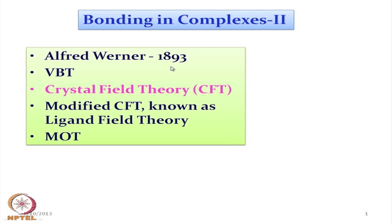At that time, the bonding idea between two atoms was not so clear, and he proposed that a particular type of metal ion can bind to so many ligand systems, such as water molecule, ammonia molecule, or ethylenediamine molecule, and give some important characteristics for those species which we can derive when the metal is bound to the ligand system.